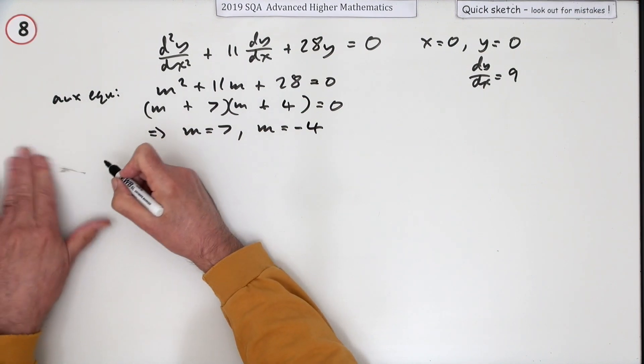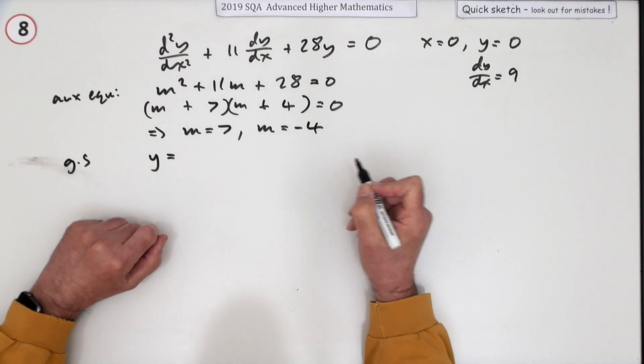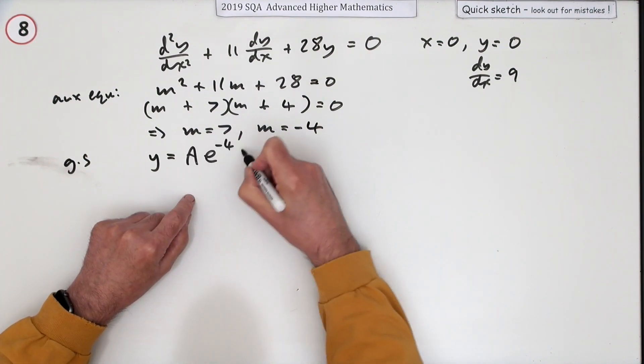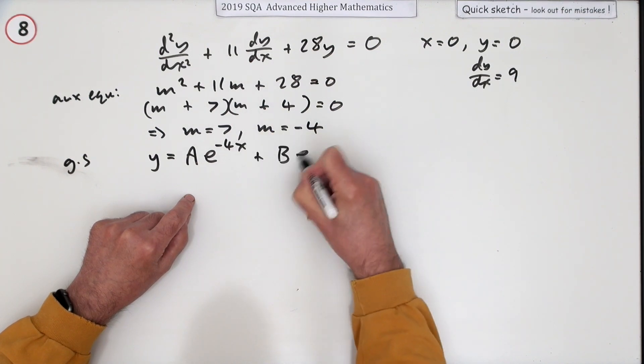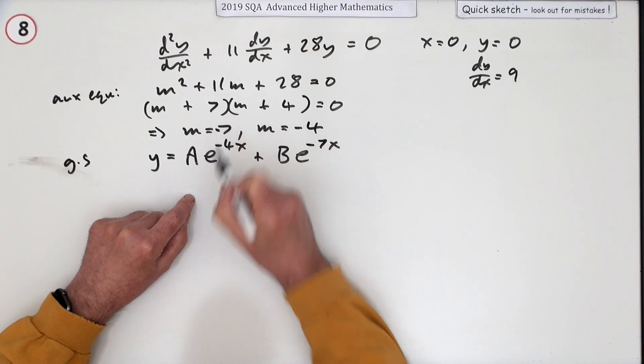So that lets you get your complementary function, although in this case this is your general solution, isn't it, because that's all that's there. So it's going to be the form of Ae^(-4x) plus Be^(-7x).